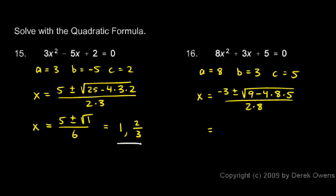So now we start to simplify this, but something happens in this case. Negative 3 plus or minus the square root of, if we have 9 minus 4 times 8 times 5, well, what is that 4 times 8 times 5? Well, the 4 times the 5 is 20, and 20 times 8 is 160. So we have 9 minus 160, which is negative 151, all over 16.